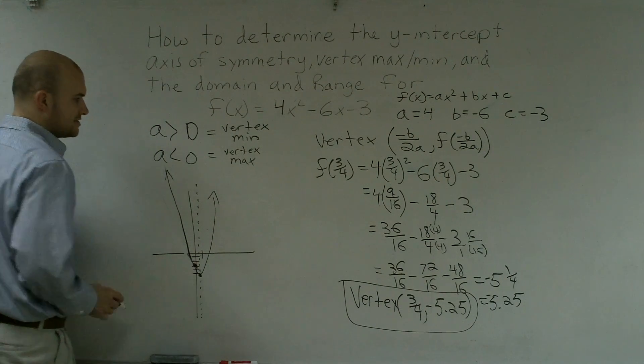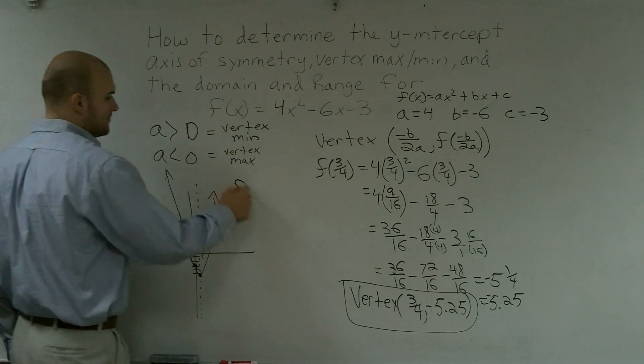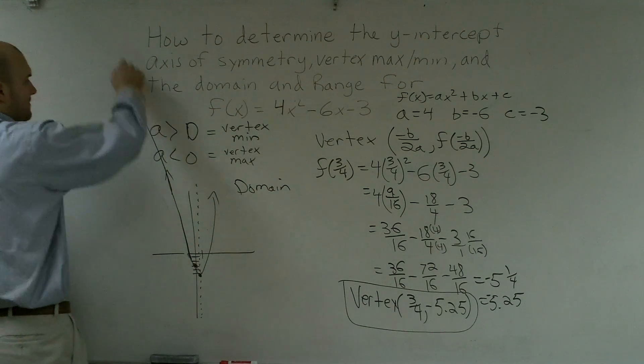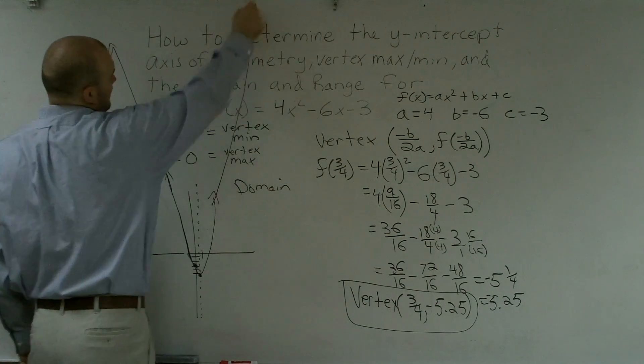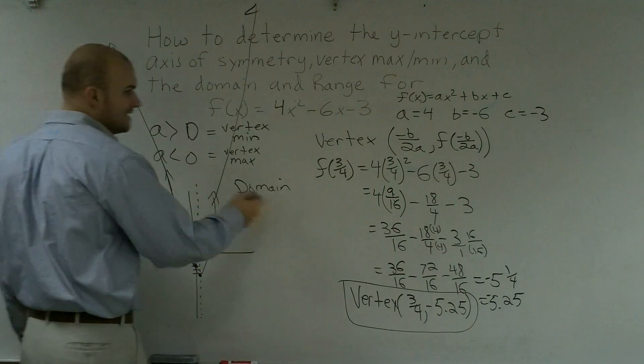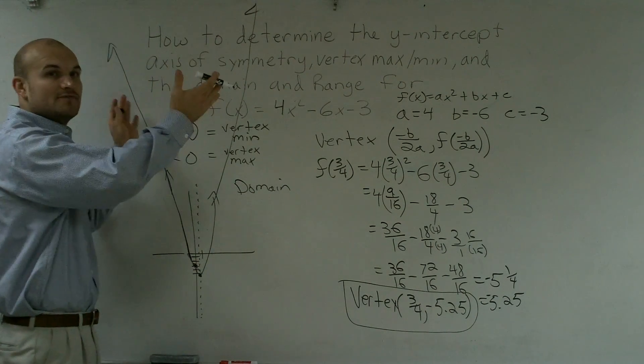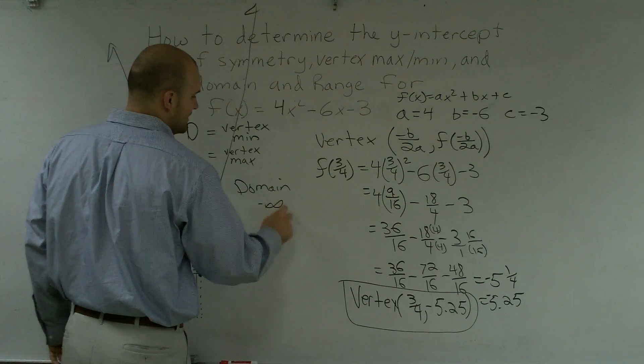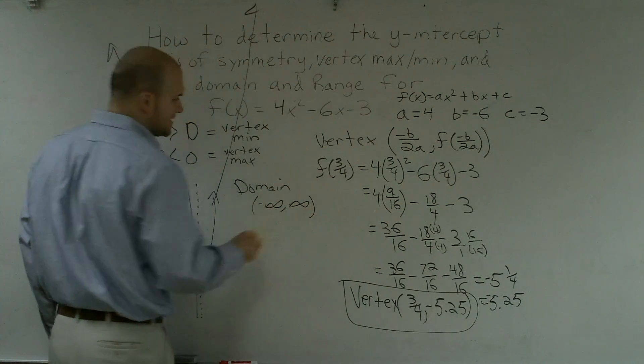It crosses at the y-intercept, and there's your vertex. So my domain, as this graph keeps on going up, it gets wider and wider. So my domain is going to be all real values. As this graph keeps on going farther up, it's getting wider and wider. So we like to say from -∞ to ∞. That's your domain.